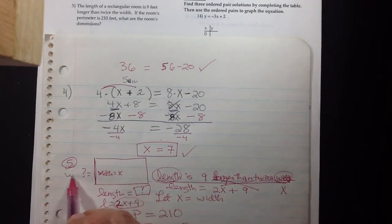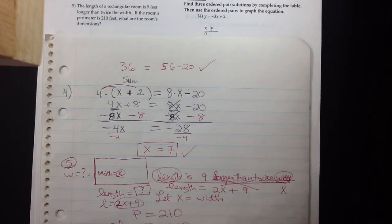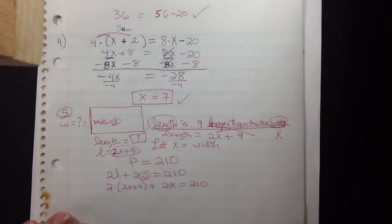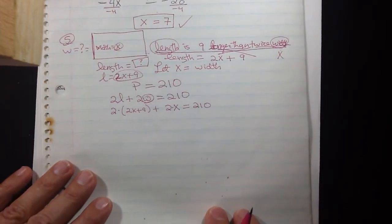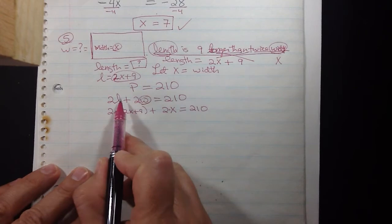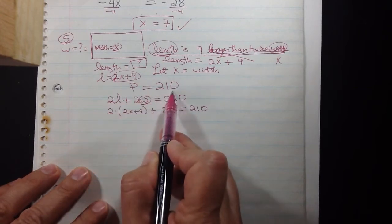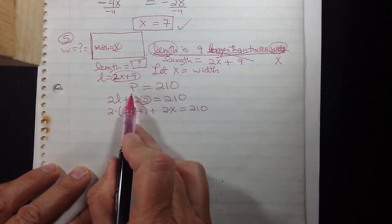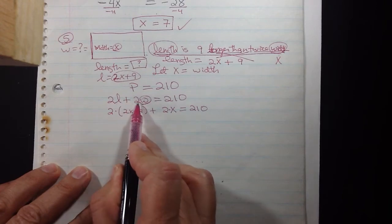So that's our equation which isn't too different from the other linear equations we've been solving. Oh sorry I wrote that off the camera, so let me go over that. So we know perimeter's 210. The perimeter formula is double your length plus double the width.